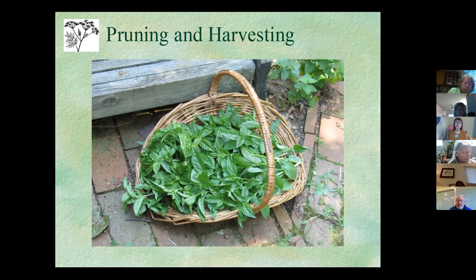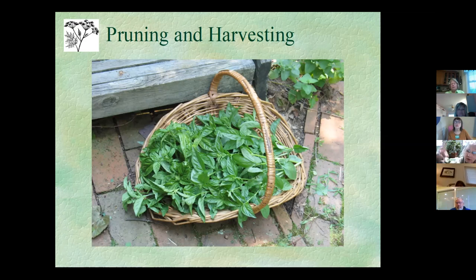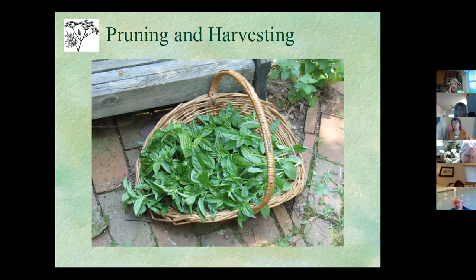To get big bushy basil plants, you prune hard. Start when the plant is still small — once it has branched out you can prune again at each branch point, and you'll double your stems each time. By pruning a lot you can get it to branch into a very full, productive plant. This African blue basil, for example, can get two to two-and-a-half feet wide depending on weather.